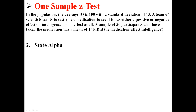Step two is to state alpha. Remember that alpha is our probability of making a type 1 error. In this case, we're going to set it at 0.05. It will almost always be set at 0.05 by default — it might be 0.01, but in this case we're just going to use 0.05.